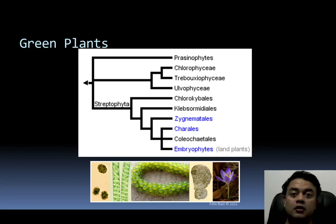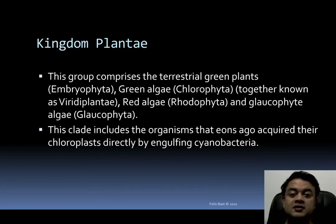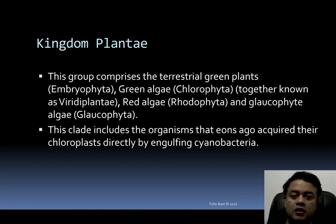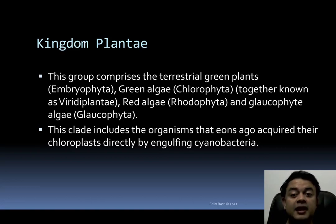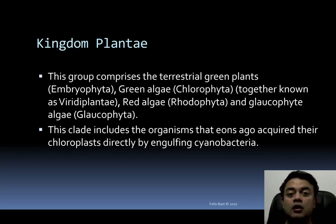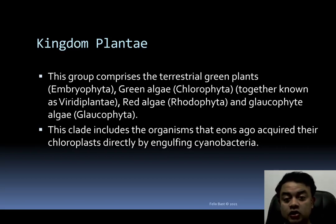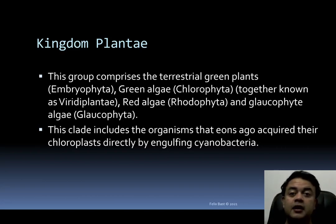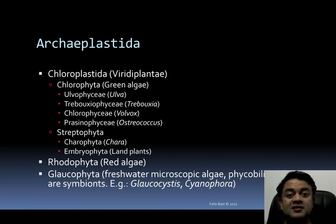In summary, Kingdom Plantae comprises terrestrial green plants (embryophytes) and the non-monophyletic green algae (Chlorophyta), together called Viridiplantae. In addition to Viridiplantae, Kingdom Plantae also includes Biliphyta — Rhodophyta (red algae) and Glaucophyta. This clade, Archaeplastida, includes organisms that acquired their chloroplasts directly by engulfing cyanobacteria — the product of primary endosymbiosis.